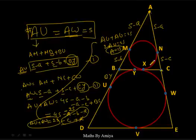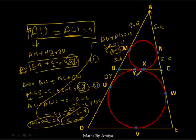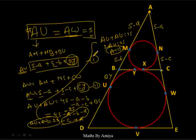This result — AU = S (the semi-perimeter) — could appear in an examination. So far we have checked four concepts: first is MPT, second is S − A / S − B / S − C, third is BC + DE = CE + BD (opposite sides in quadrilateral with incircle), and fourth is AU = AW = semi-perimeter.